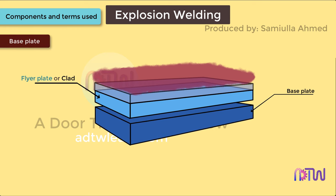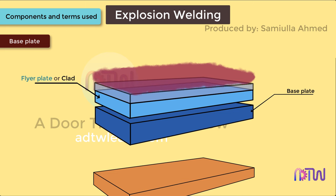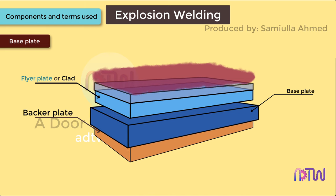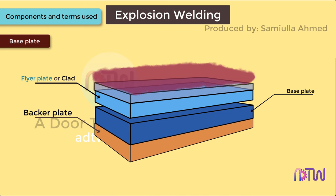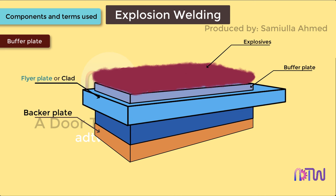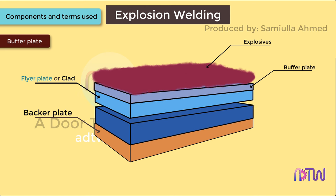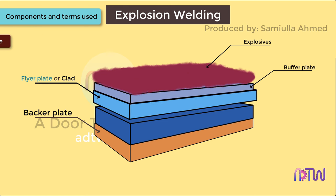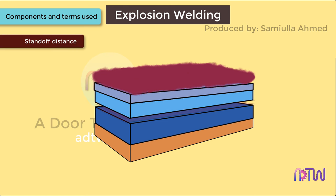Base plate: the base plate is a stationary plate backed by a backer plate, which supports it during the explosion and prevents any distortion. Buffer plate: the buffer plate is placed between the explosives and the flyer plate. It prevents any damage inflicted by the explosives on the flyer plate and reduces the effect of the explosion on the surface of the flyer plate.